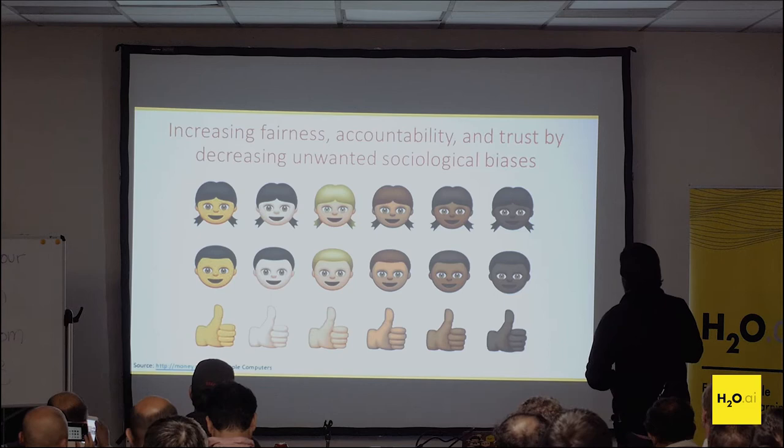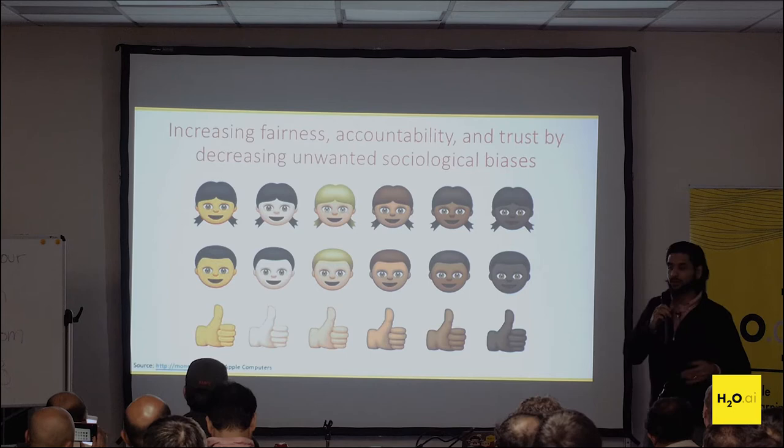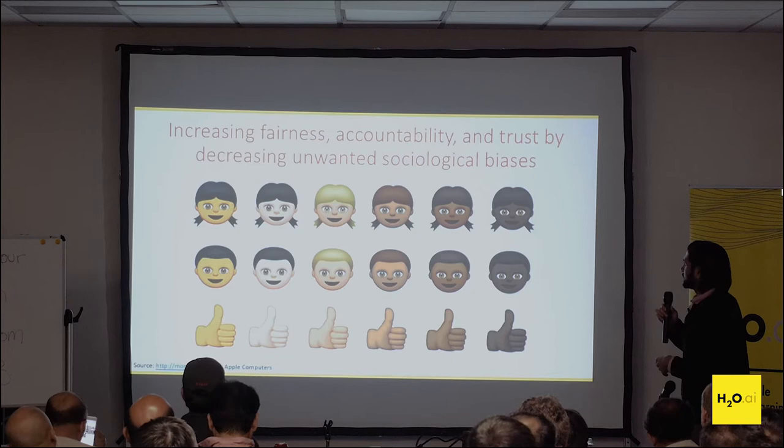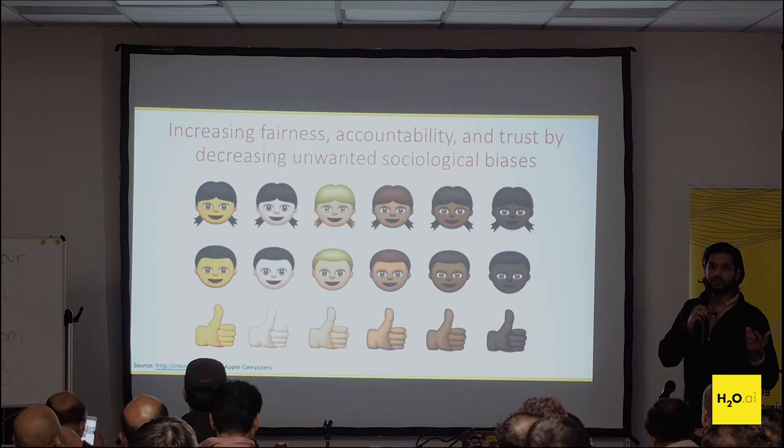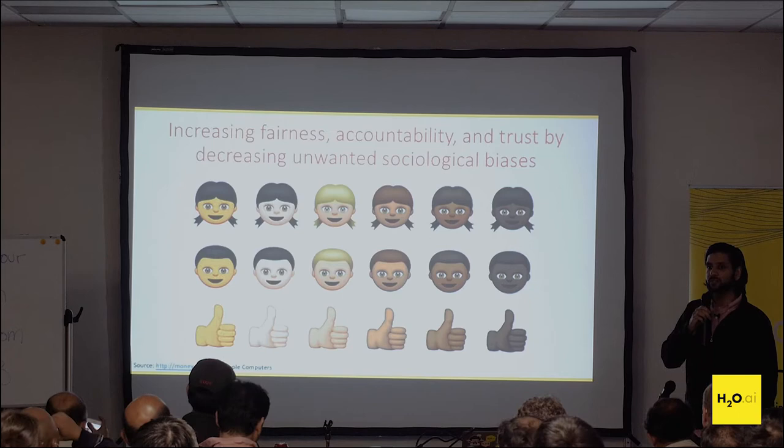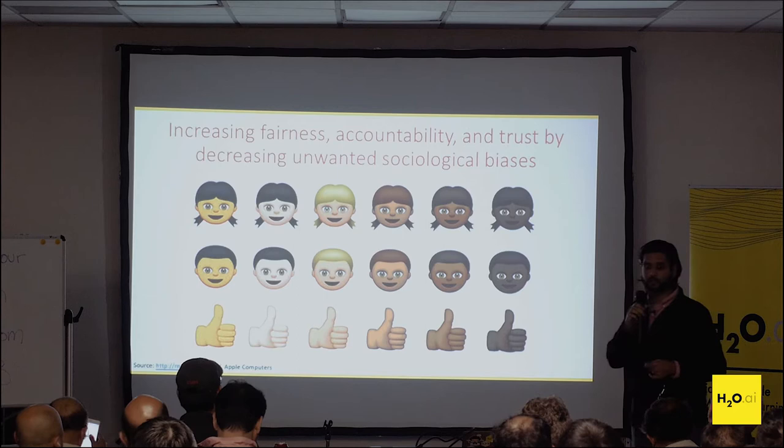On another note, we're trying to make sure machine learning models aren't biased — that they're fair, they account for everything, and they're trustworthy. We don't want any sociological biases in models. If you're familiar with ProPublica, they published a study examining software called COMPAS which tries to predict if someone will go back to prison. They realized there was maybe some sociological or racial bias in that software. These are the kinds of things we're trying to prevent using MLI — machine learning interpretability.